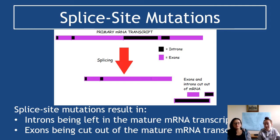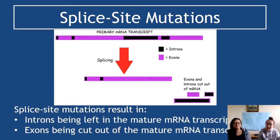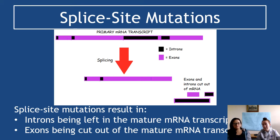This is known as a splice site mutation. As seen in a similar diagram before when we originally talked about splicing, a splice site mutation results sometimes in introns being left in and exons being cut out. The wrong introns are left in the mature mRNA transcript, and the crucial exons that should be there are cut out. That means the wrong part of the mRNA code is left in the mature transcript, so when the ribosome reads it, it reads the wrong code and produces the wrong amino acids, resulting in the wrong protein.